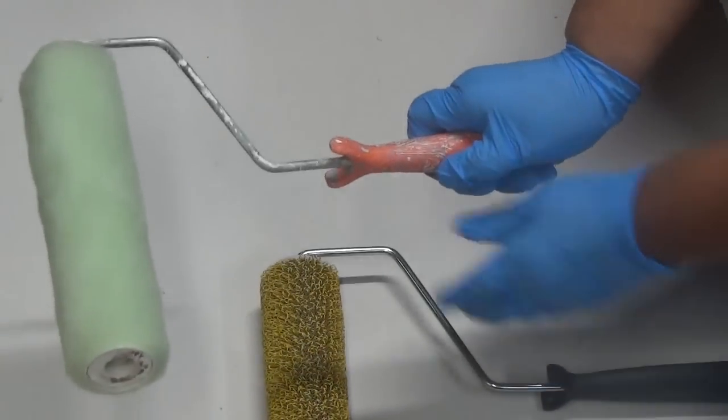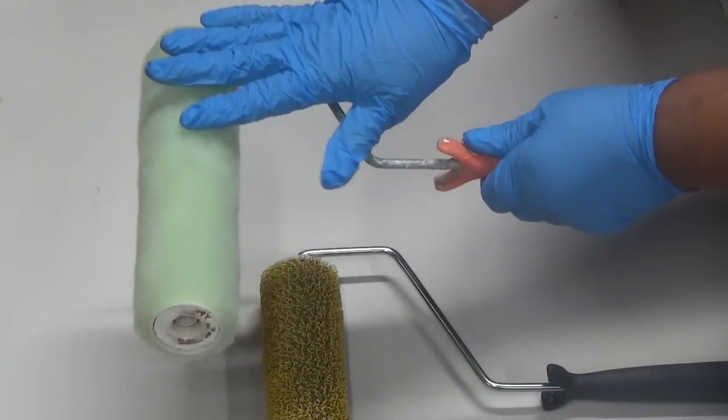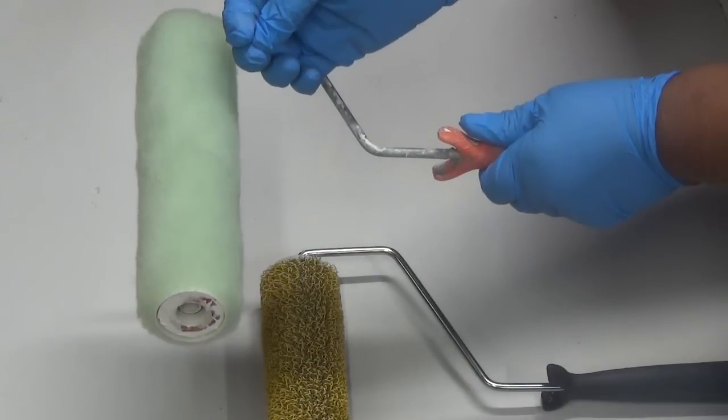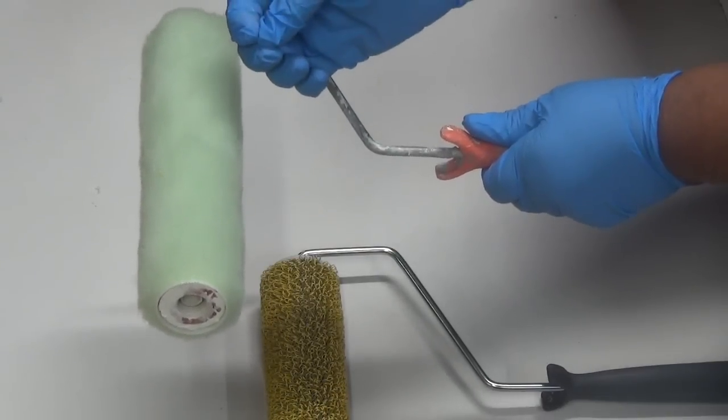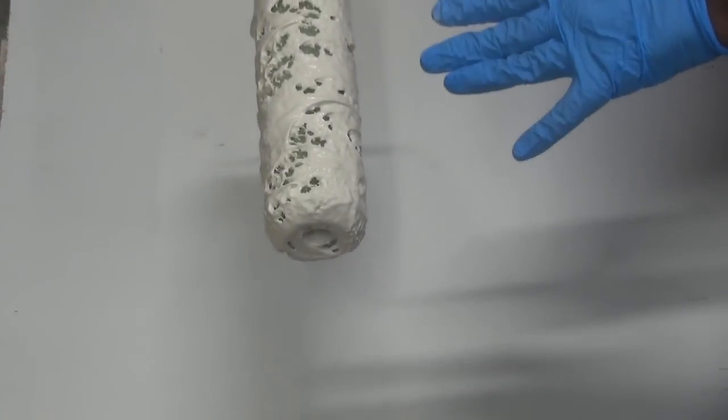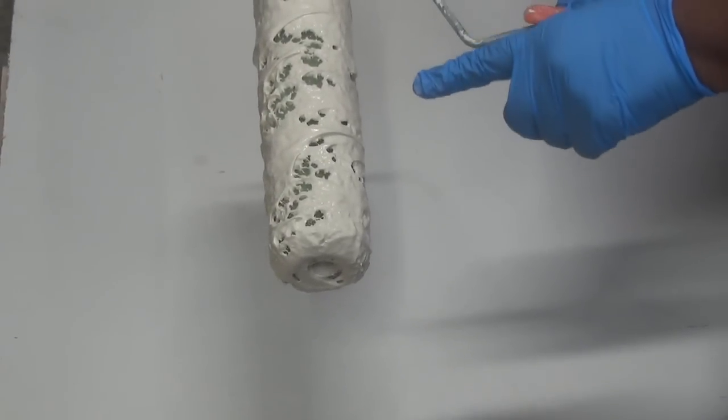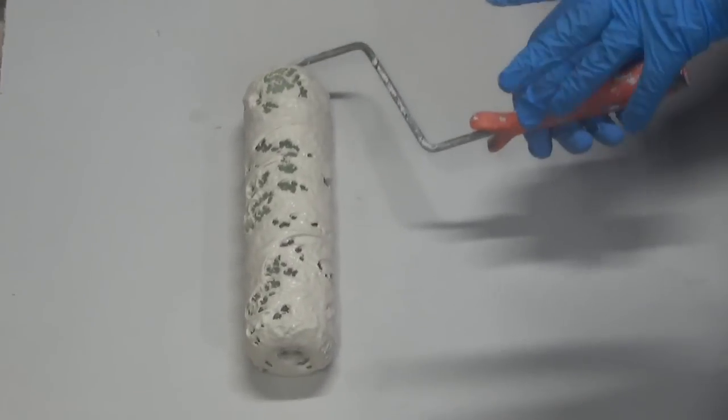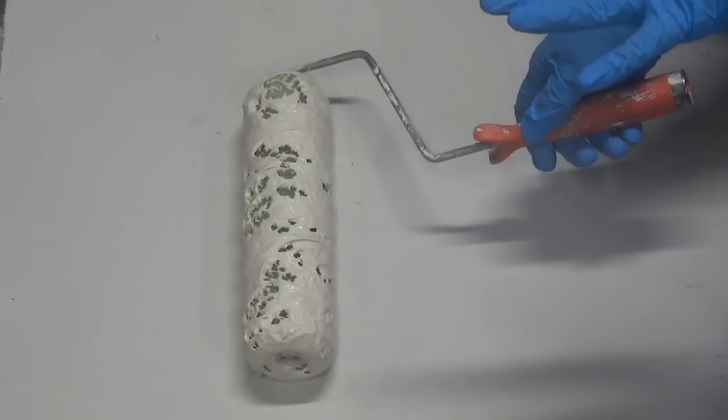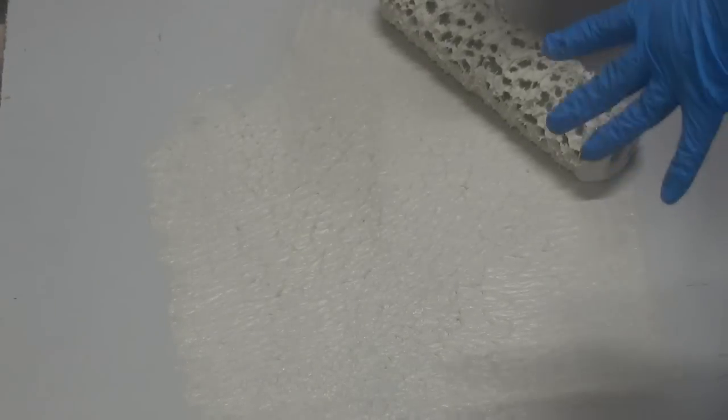I'm going to show you how both rollers perform with joint compound. The results are similar with the regular paint roller for one-third the cost. Okay, so I've got my joint compound on a roller and you have to use a roller to apply the joint compound before you put the pattern in. Let's first just get our joint compound on our drywall.